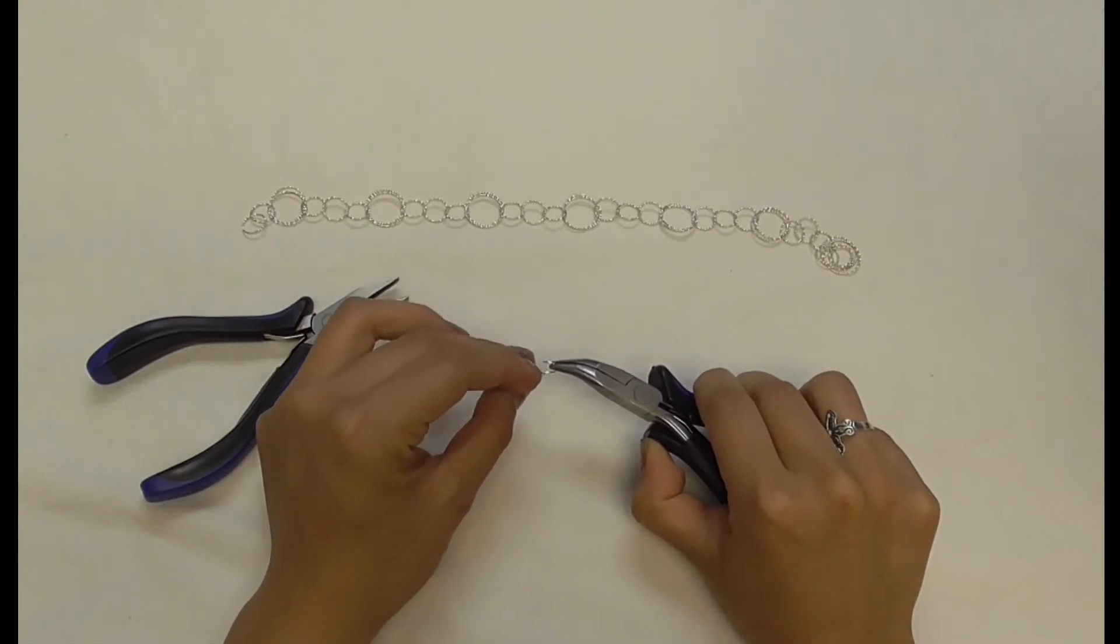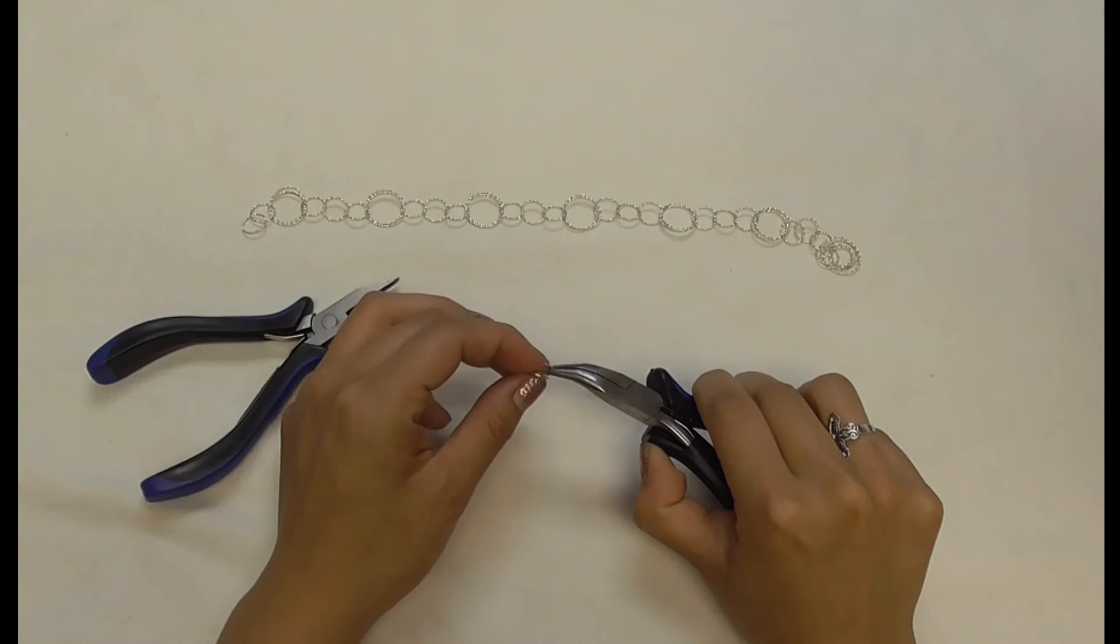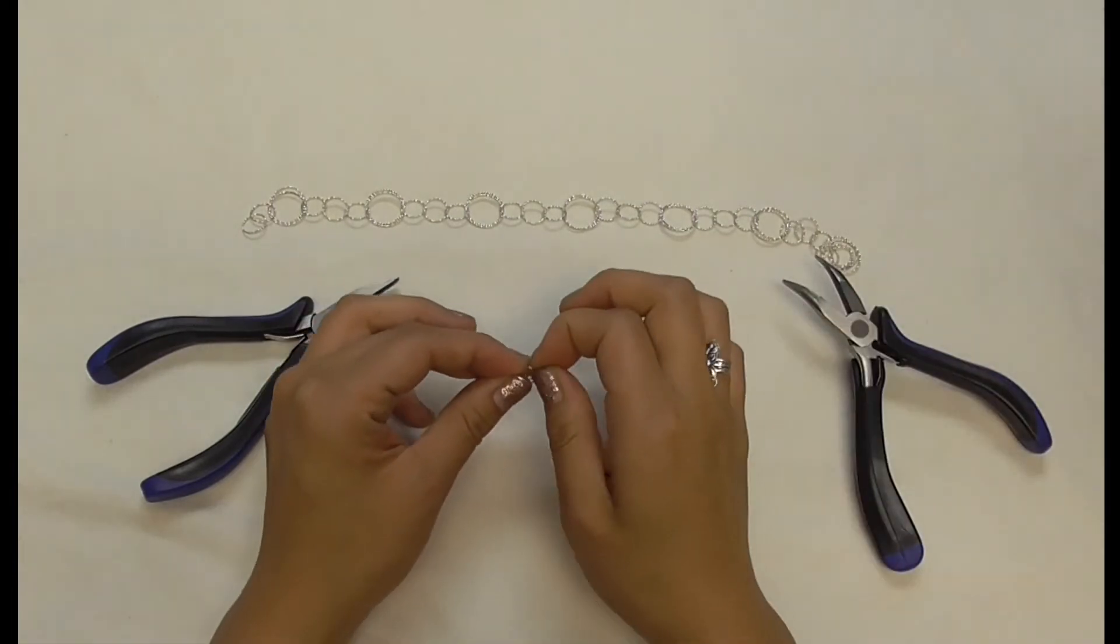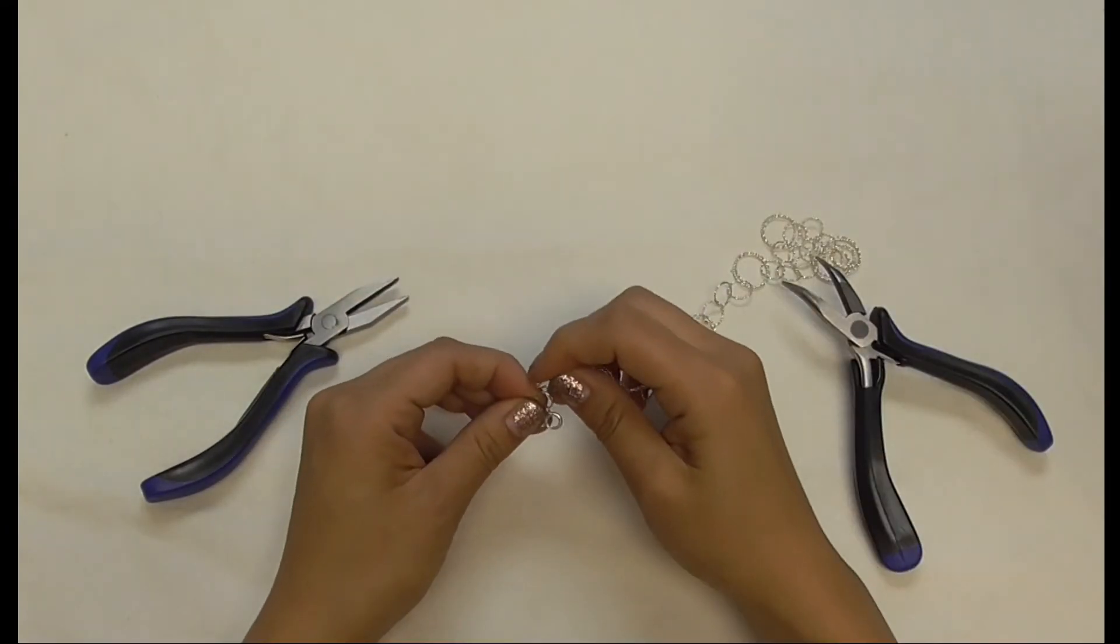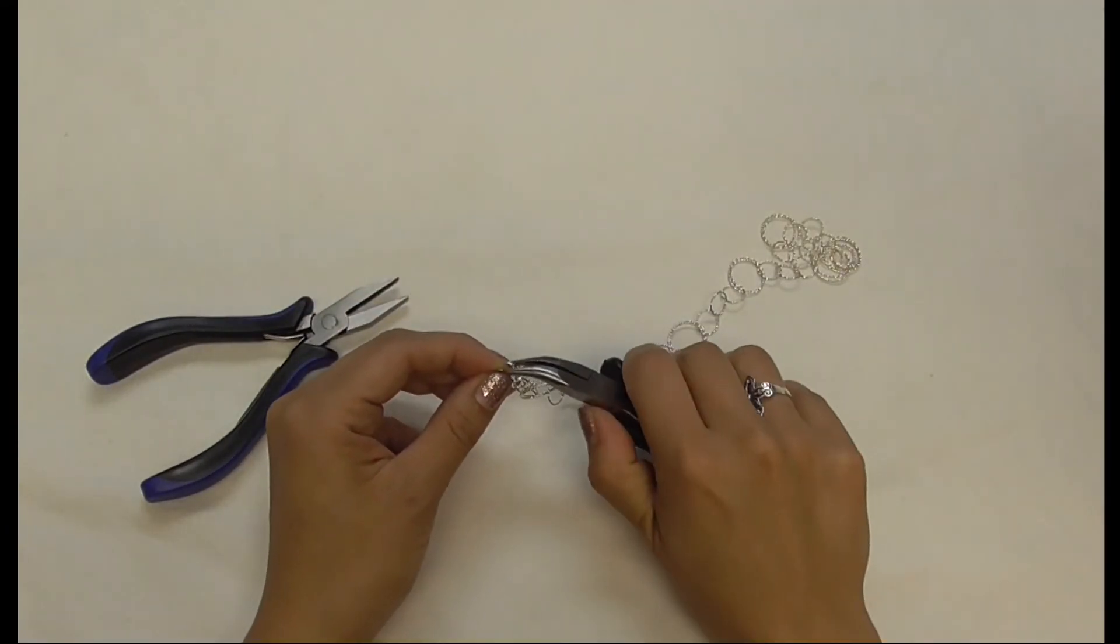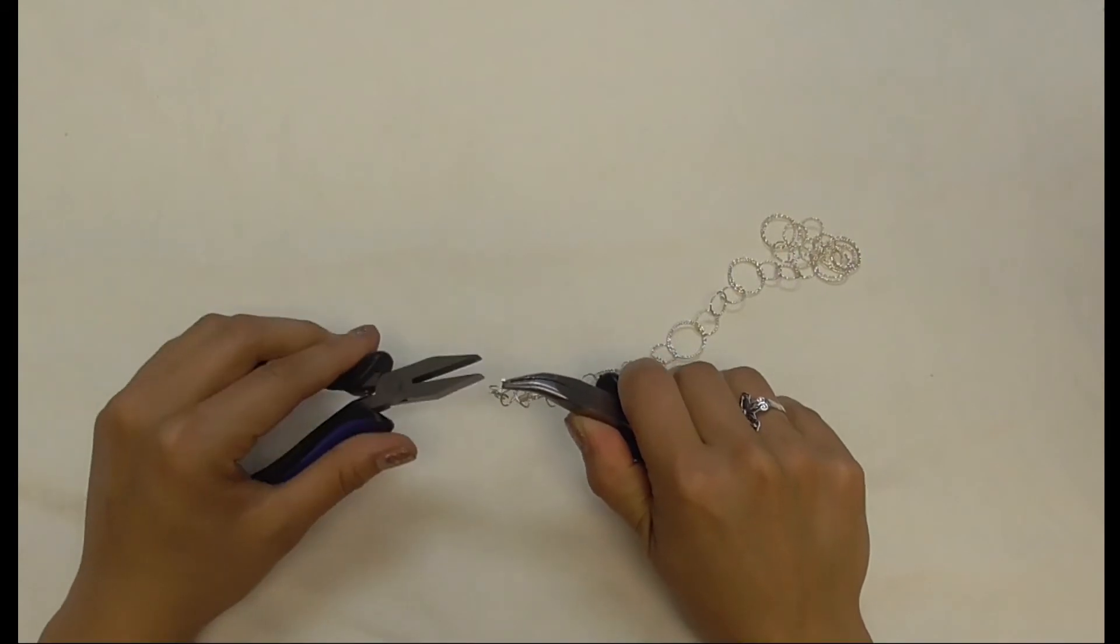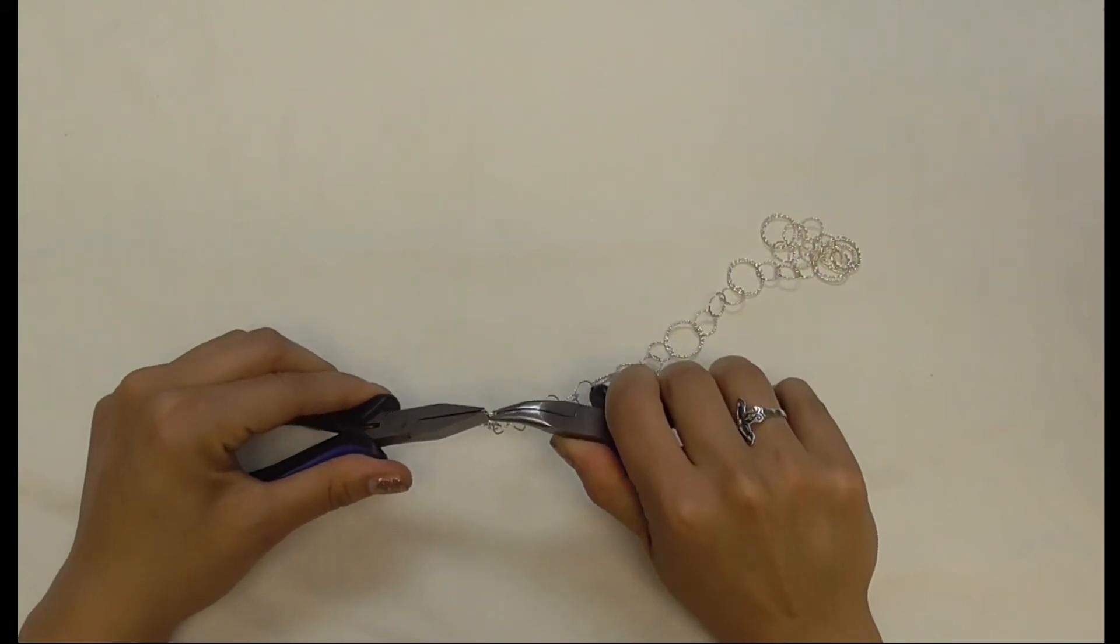You're going to want to put the tiny loop of clasp onto the jump ring and the end link of the chain and securely close with your pliers again, making both ends flush so there's no gaps.